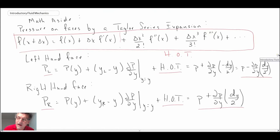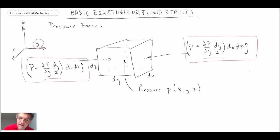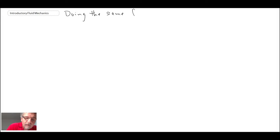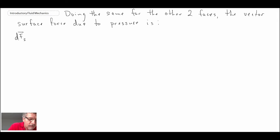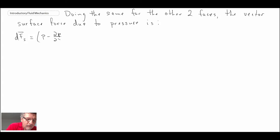We've done this for the left and the right in the y direction. Now we'll continue on with the x and z directions, and we can rewrite or expand it for all three faces. We're going to write out the vector surface force due to pressure for the x direction, the y, and the z, multiplying by the area that the x-direction pressure is acting on, which is dy dz.